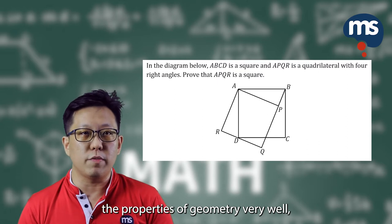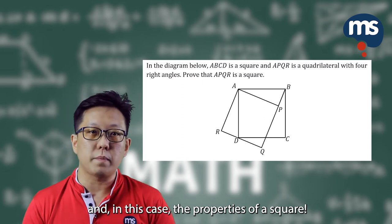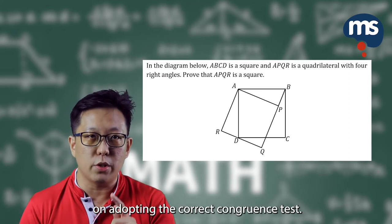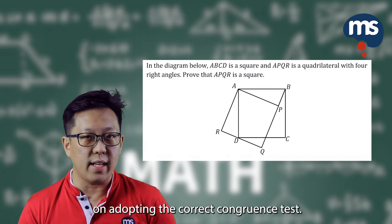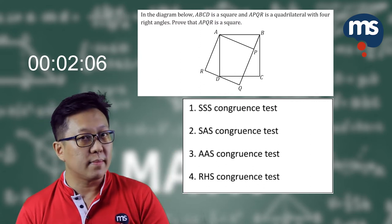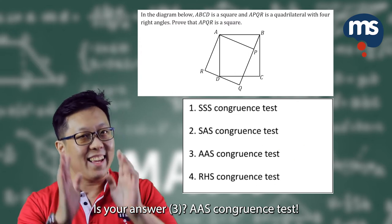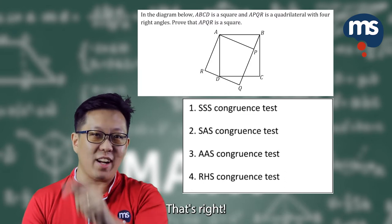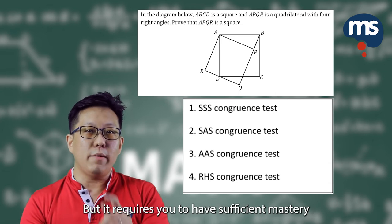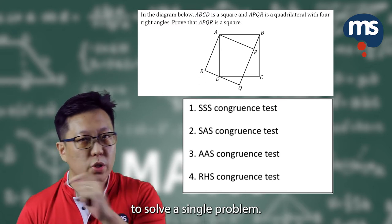You will need to know the properties of geometry very well, and in this case, the properties of a square. For this question, the examiner is testing you on adopting the correct congruence test. So which one would you choose? The answer is option number three — AAS congruence test. That's right. As you can see, the concept is not too difficult, but it requires sufficient mastery to be able to combine the relevant concepts to solve a single problem.